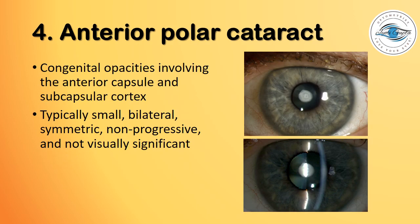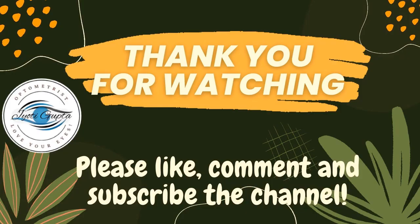Anterior polar cataracts are congenital opacities involving the anterior capsule and subcapsular cortex. Typically, they are small, bilateral, symmetric, and non-progressive, and are not of visual significance.